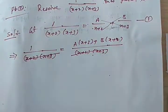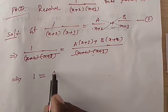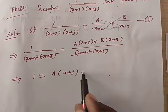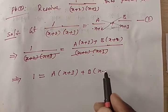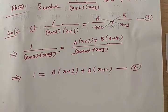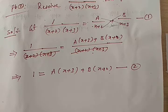So what we have now is: 1 = A(x+3) + B(x+2). Call this Equation 2. To get the values of A and B, we need to solve Equation 2. Now we will see how many methods are available and what the different approaches are to solve Equation 2.